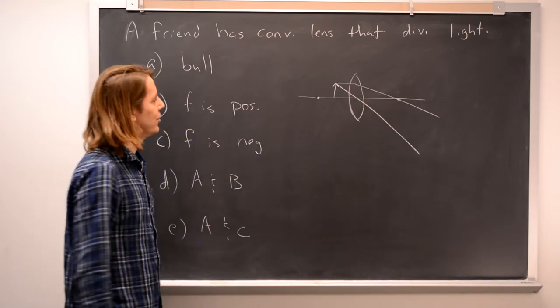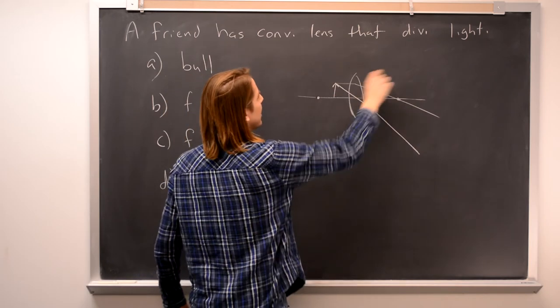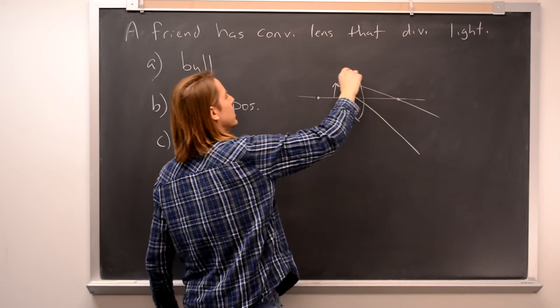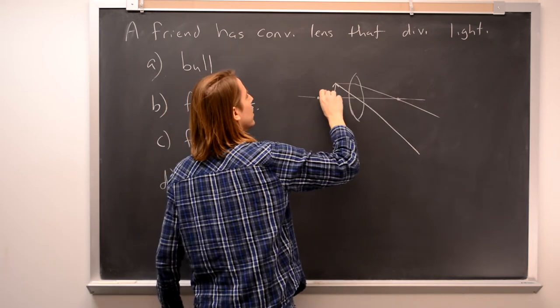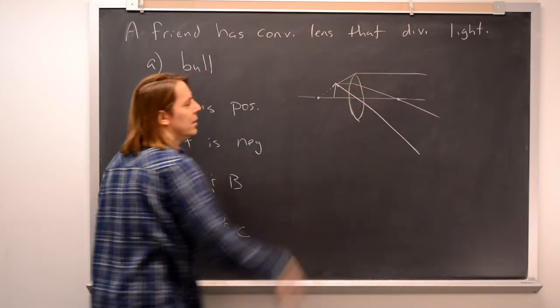And you can see those are starting to diverge there. And then you can imagine a backwards ray. The one that came straight here would have to go there. So you can draw like that. So those are diverging rays.